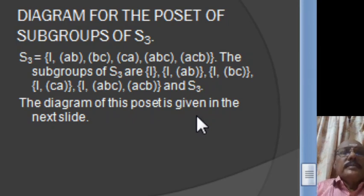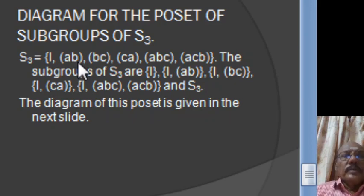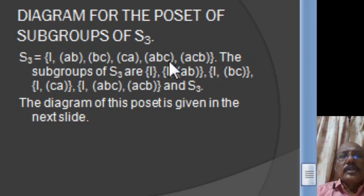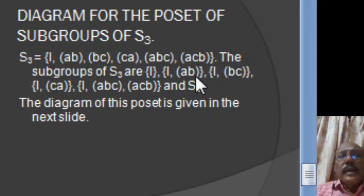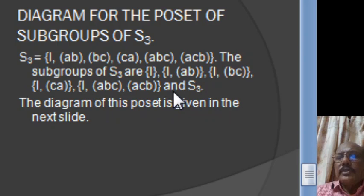Now we consider the subgroups of S3, the symmetric group. The elements of S3 are the identity permutation, the 2-cycles AB, BC, CA, and the 3-cycles ABC, ACB — these are the six elements. The subgroups of S3 are: {I}, {I,AB}, {I,BC}, {I,CA}, {I,ABC,ACB}, and S3.